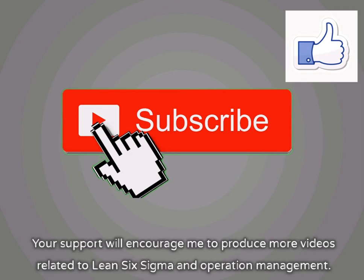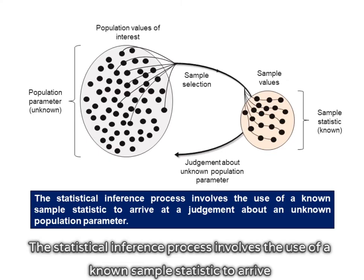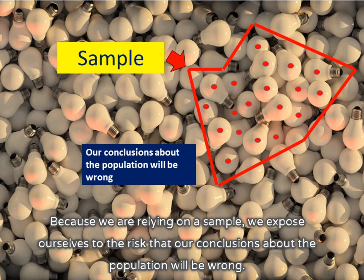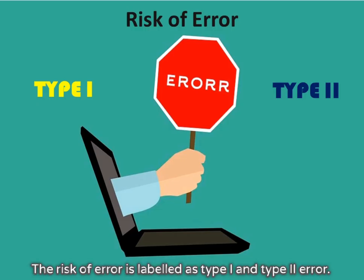Your support will encourage me to produce more videos related to Lean Six Sigma and Operation Management. A statistical inference process involves the use of a known sample statistic to arrive at a judgment about an unknown population parameter. Because we are relying on a sample, we expose ourselves to the risk that our conclusions about the population will be wrong. The risk of error is labeled as type 1 and type 2 error.